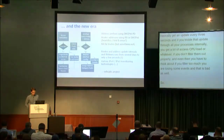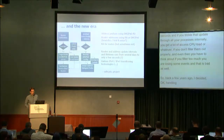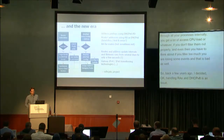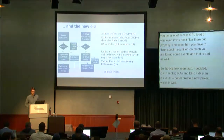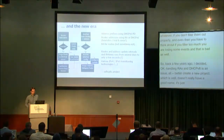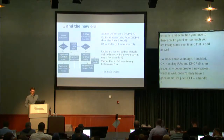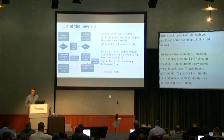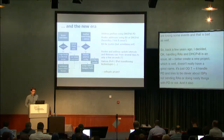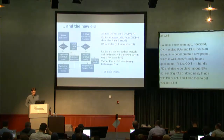So back a few years ago, I decided handling RAs and DHCPv6 is an issue, and all the tools that were available at that point weren't really good at it, so I had to create a new project. It's called ODHCP6C, which is a combined DHCPv6 and RA client. It handles PD and tries to be clever about ISPs not sending RAs or doing nasty things with PD, and it also tries to get you into all of the transitioning technologies.